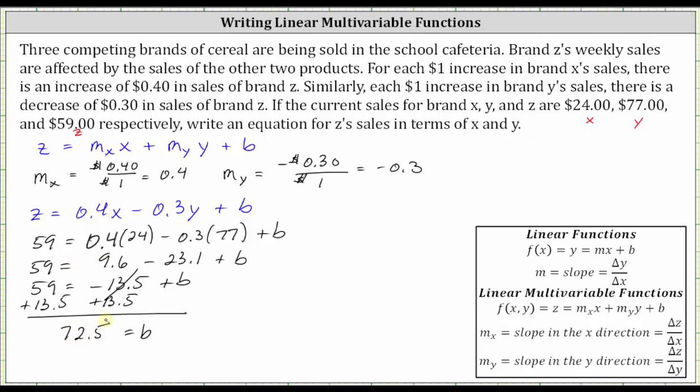Now we have everything we need to write our linear equation that relates Z to X and Y. We now know Z equals 0.4x minus 0.3y plus 72.5. This is the equation that relates Z sales in terms of X and Y.